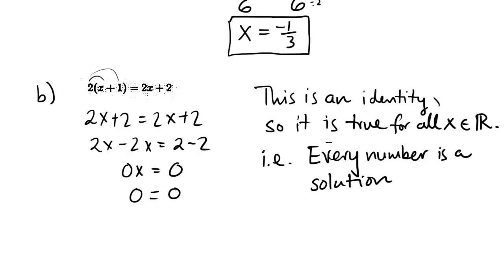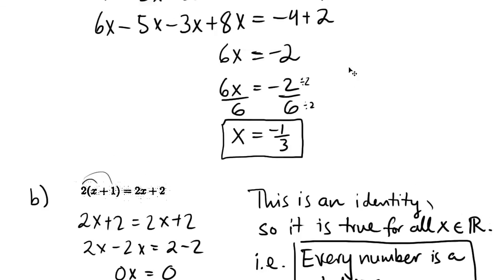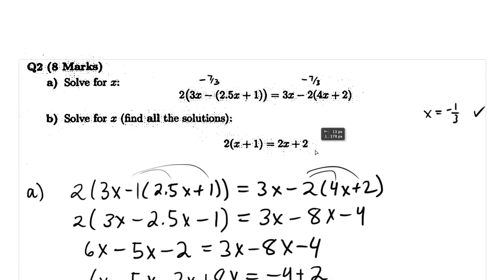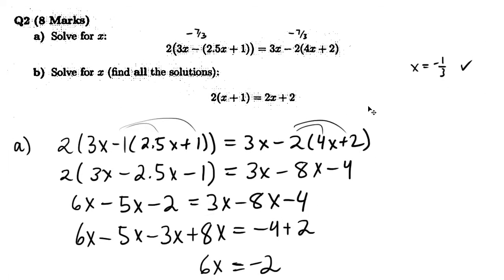And our final answer for this one, the first a is x equals negative one third. And our second answer is that it's true. The second equation is true for every number. And that completes this question. Thank you.